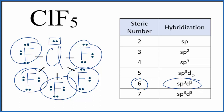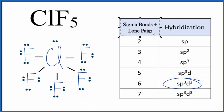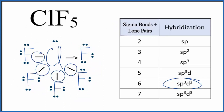The other way we can do this is to look at the number of sigma bonds and lone pairs. Sigma bonds are single bonds — we have one, two, three, four, five — and then we have our lone pair. Five plus one is six, so sp3d2 is the hybridization for ClF₅.